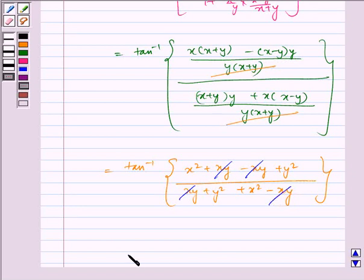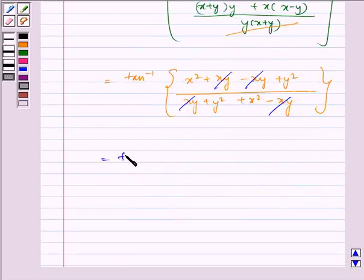So we are left with tan inverse of x squared plus y squared by x squared plus y squared.